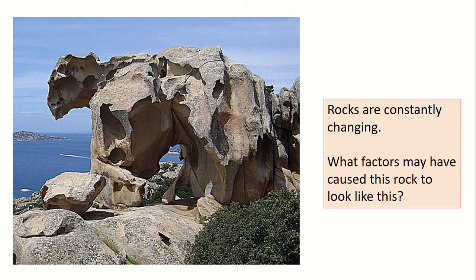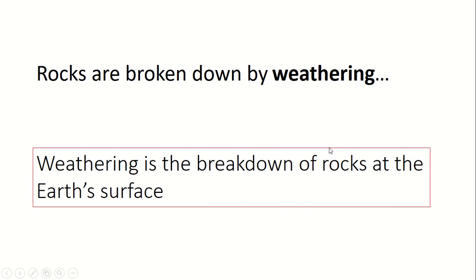You might have come up with things like rain or the wind, or you might have thought about how humans have impacted them as well. Rocks are broken down by something called weathering. Weathering is, by definition, the breakdown of rocks at the Earth's surface. Whenever we see rocks being broken down or destroyed, the term we use is called weathering.